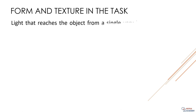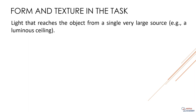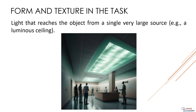Now let's look at light that reaches the object from a single very large source — like standing in a bright room with a big skylight. The light comes from all directions and creates a soft, even glow that can be ideal for revealing the texture of objects. Modeling is slight and subtle, with no noticeable shadows and barely any texture emphasis — perfect for those who want a minimalistic look. A luminous ceiling, for example, creates a soft and uniform glow ideal for spaces such as hospitals or offices, and can create a sense of spaciousness and openness.